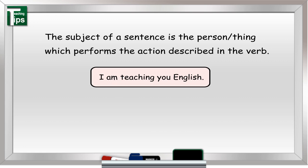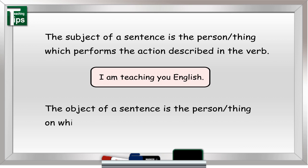Now, write on the board: 'The object of a sentence is the person or thing on which the action is performed.' Using the same sentence, explain that 'you' is the object of the sentence, as the action is being performed on them. In other words, tell your students you are teaching and they are being taught — hence, you are the subject and they are the objects.